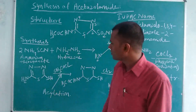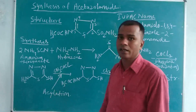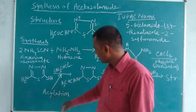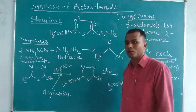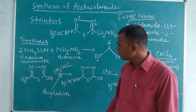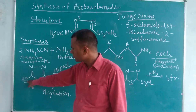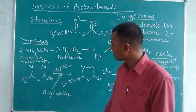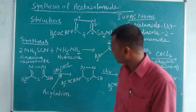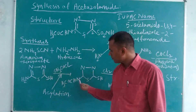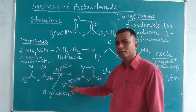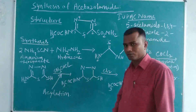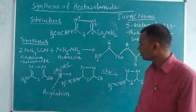When this compound reacts with acetyl chloride (CH₃COCl), using the process of acylation, it gives an acylated product. The amino group is acylated by the acetyl chloride to give a COCH₃ group. The resulting compound is 2-acetamido-5-mercapto-1,3,4-thiadiazole.